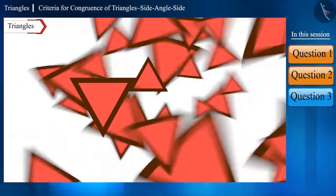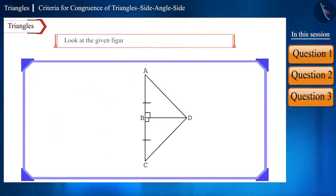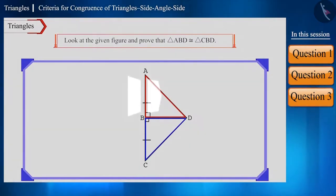Let's take one more question. Look at the given figure and prove that triangle ABD and triangle CBD are congruent. Pause the video and try to solve this question yourself and finally see the solution.